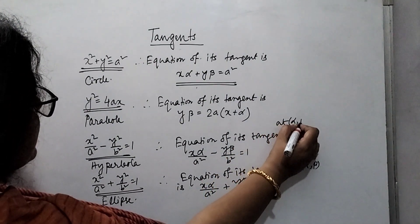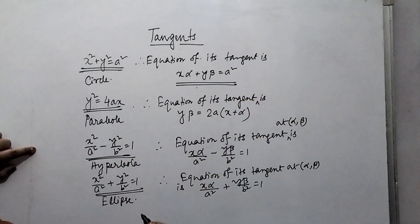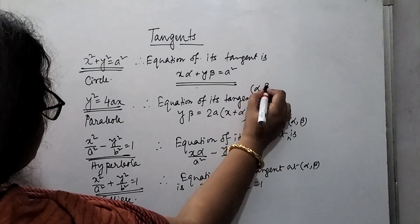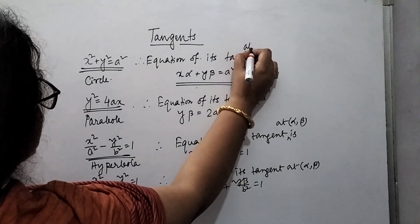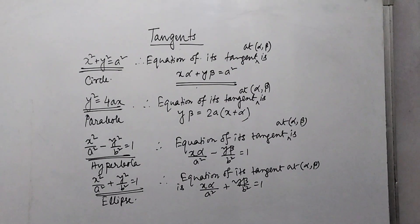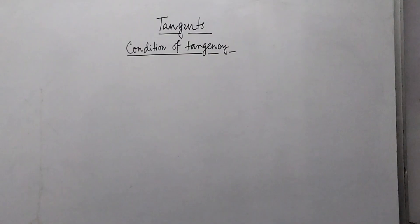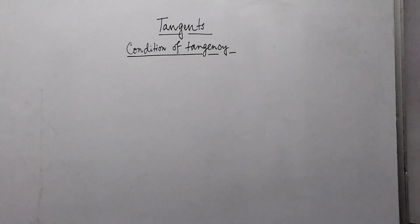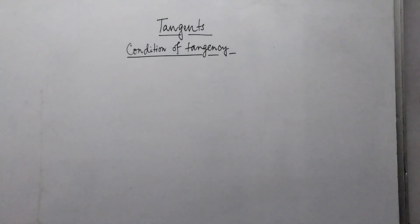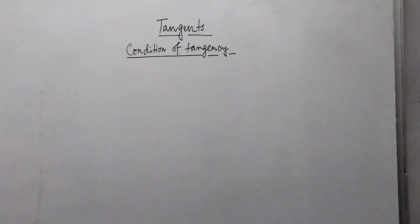In all these cases, I am considering (alpha, beta) as the coordinate of the point at which the tangent is drawn. So this is how we can get the equation of tangents of different conics at any fixed point on it. Now we shall discuss the conditions of tangency — a very important part of this chapter. We will learn how, just by seeing a particular straight line, we can decide whether it is a tangent of a particular conic or not.